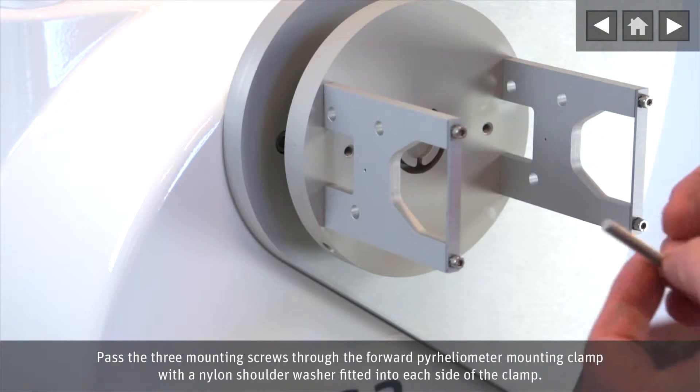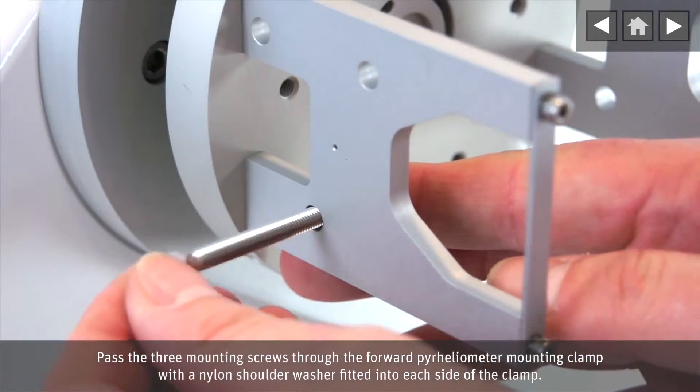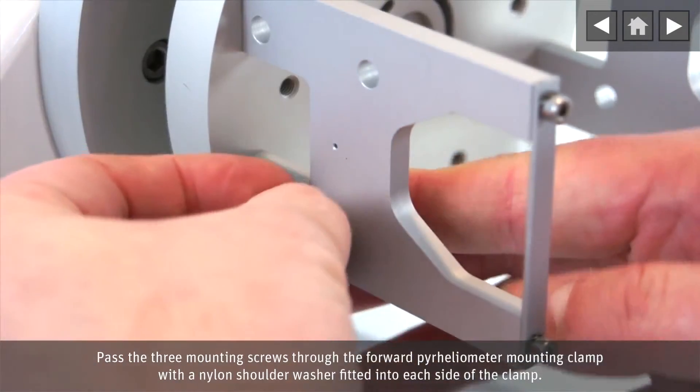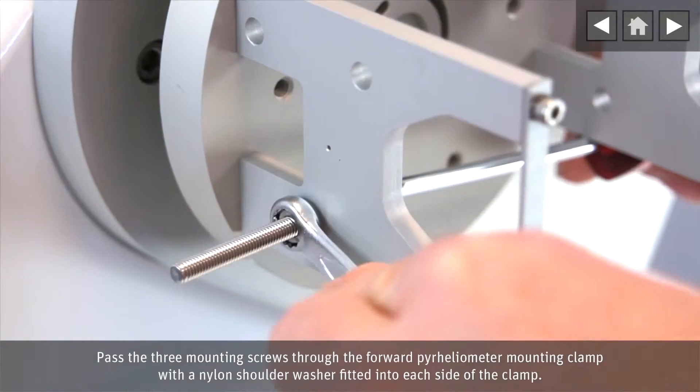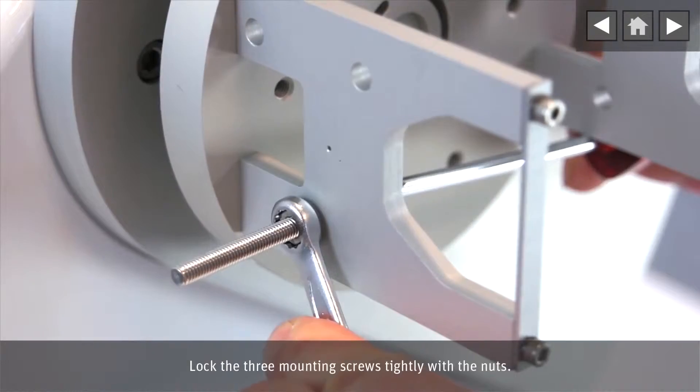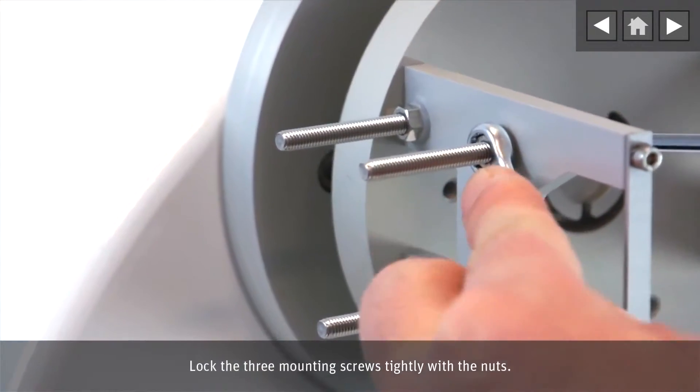Pass the three mounting screws through the forward pyroheliometer mounting clamp with a nylon shoulder washer fitted into each side of the clamp. Lock the three mounting screws tightly with the nuts.